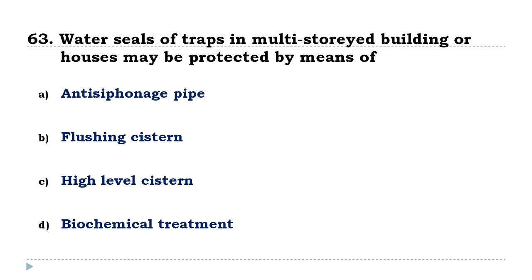Water seals of traps in multi-storied buildings or houses may be protected by means of anti-siphonage pipe.